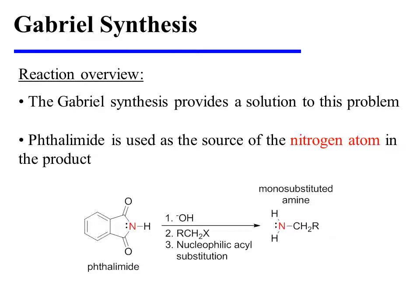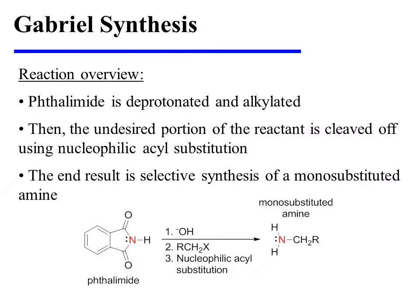The Gabriel synthesis provides a solution to this problem. Thalamid is used as the source of the nitrogen atom in the monosubstituted amine product. Thalamid is first deprotonated, then alkylated, and finally the undesired portion of the reactant is cleaved off using nucleophilic acyl substitution. The end result is selective synthesis of a monosubstituted amine.